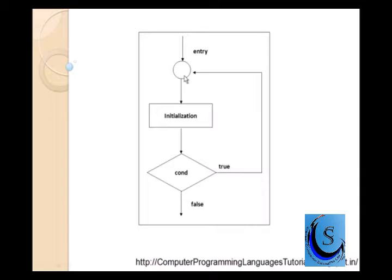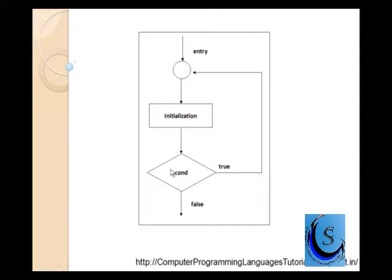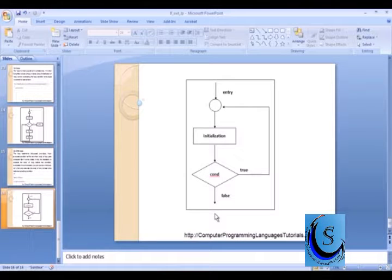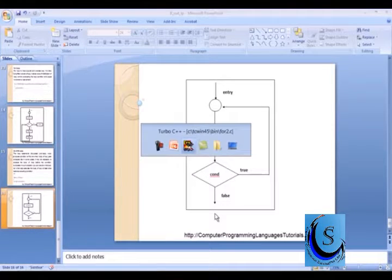Look at the screen. First there is an entry point, then initialization is done, then the body executes, and finally the condition is checked. If the condition is true, then again the same part will repeat. If the condition is false, the loop terminates. Do-while loop is rarely used as compared to while loop and for loop.